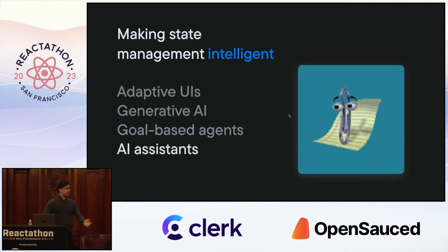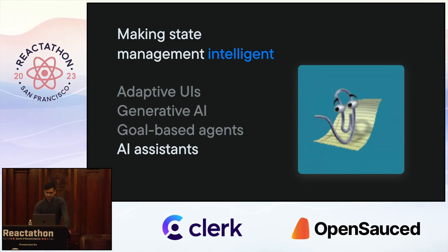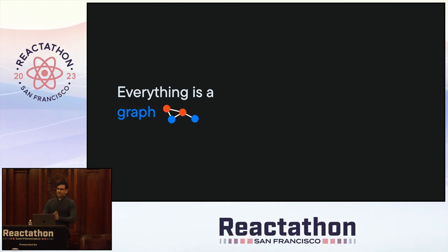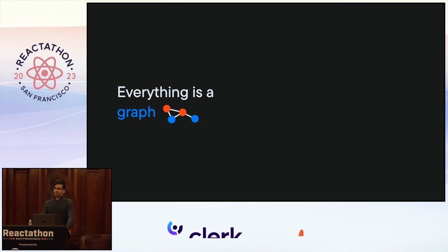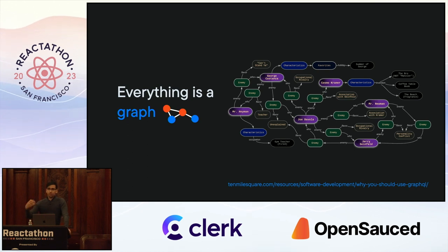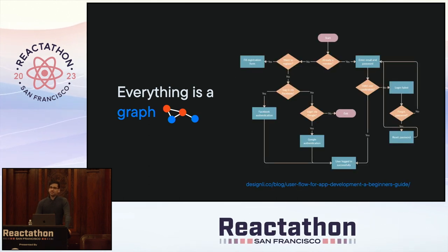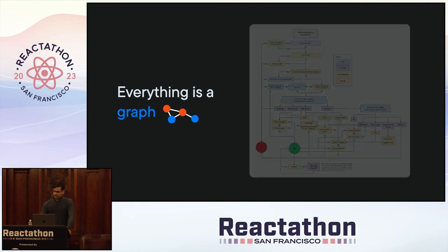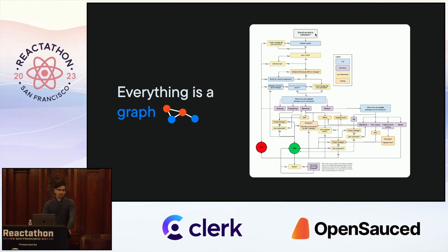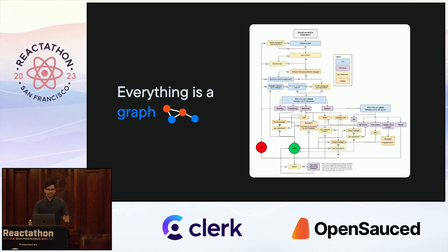One of the main ideas that really gets us to intelligent user interfaces and intelligent state management is the fact that everything is a graph — a directed graph, specifically. Everything from your relational databases to your GraphQL relationships is a directed graph. And even things like user flows — one of my favorite things to show is the Slack decision tree for whether Slack should send a notification or not. Whether it's implicit or explicit, everything in your application is technically a directed graph.